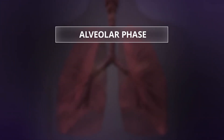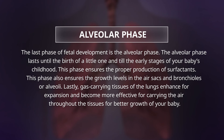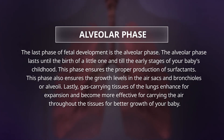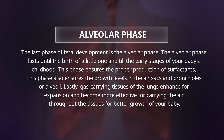The last phase of fetal development is the alveolar phase. The alveolar phase lasts until the birth of the little one and into the early stages of the baby's childhood. This phase ensures the proper production of surfactants and the growth levels in the air sacs, bronchioles, or alveoli. Lastly, gas-carrying tissues of the lungs enhance for expansion and become more effective for carrying air throughout the tissues for better growth of your baby.